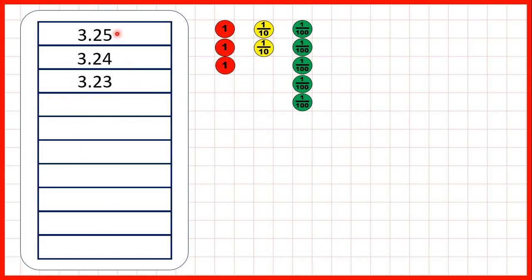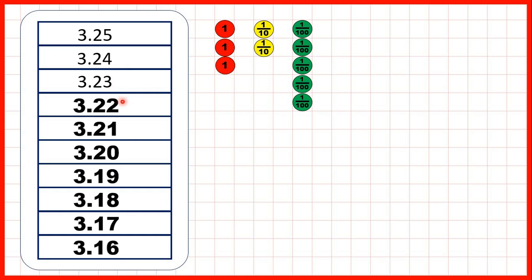3.25, 3.24, then 3.23. So what comes next? Again, we're counting back in hundredths, but rather than writing 3.20, we can just write 3.2, because all the zero tells us is that we don't have any hundredths. But 3.2 also tells us this — we don't need zeros on the end of decimals.